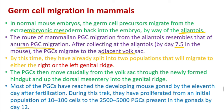After collecting at the allantois by day 7.5 in the mouse, PGCs migrate to the adjacent yolk sac. By this time they have already split into two populations that will migrate to either the right or left genital ridge.